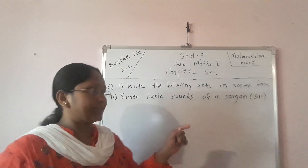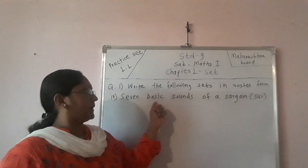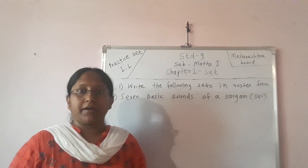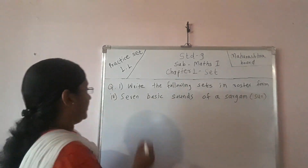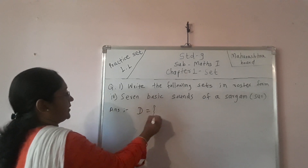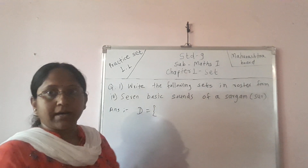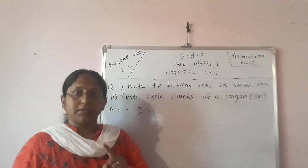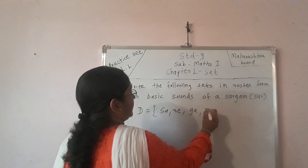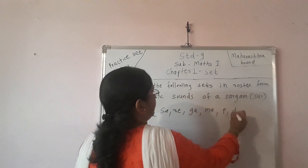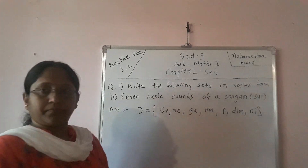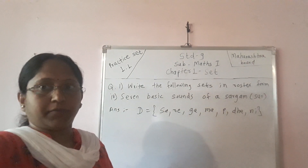Next, fourth sub-question: 7 basic sounds. We know there are 7 swaras. I declare the set as D, and the swaras are its elements. That is the answer to that particular question.